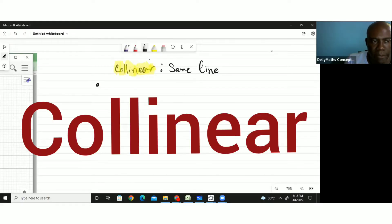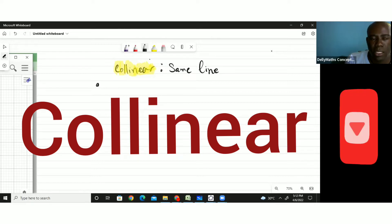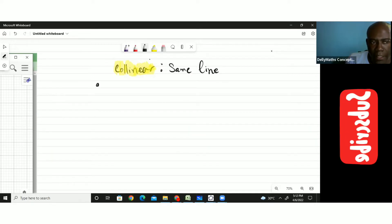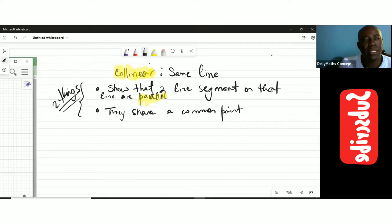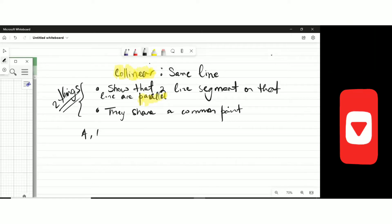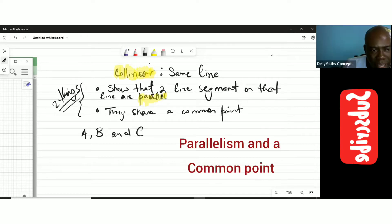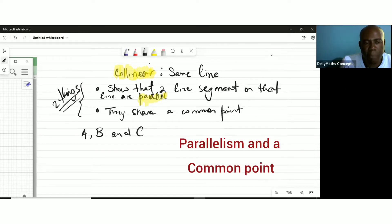Whenever lines are collinear, you have to prove that two line segments on the line are parallel. You need to get two line segments and show that they're parallel by a common point. Let us say that we have the points A, B, and C. They are points, not vectors.